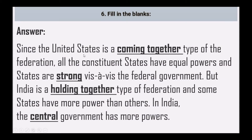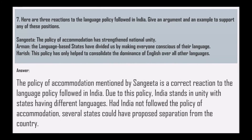Next, fill in the blanks: since the United States is a 'coming together' type of federation, all the constituent states have equal powers and states are stronger vis-à-vis the federal government. But India is a 'holding together' type of federation and some states have more power than others; in India, the central government has more powers.